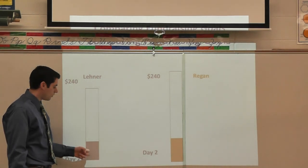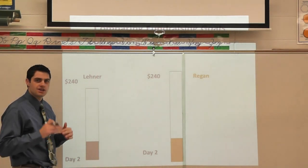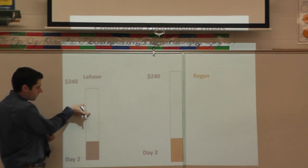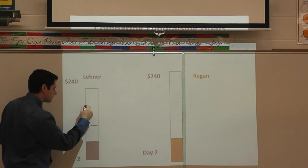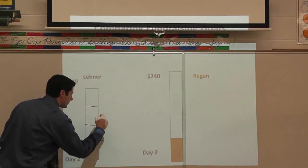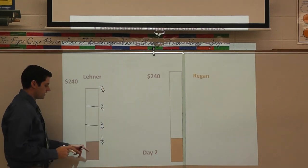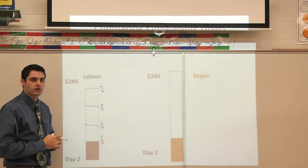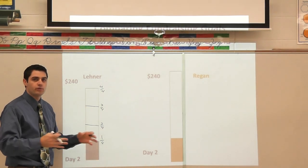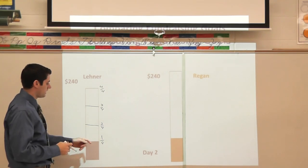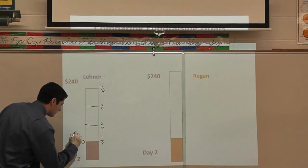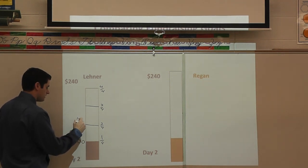Looking at this thermometer on the side, I have to figure out what fraction of our goal have we completed. Using a fraction strip page might help break this out. This looks almost like a fourth — I can almost fit four of these in here. So if I break this up into four equal parts: one-fourth, two-fourths, three-fourths, and four-fourths. A fourth of 240 is the same as taking 240 and dividing it evenly four ways. 240 divided by four is sixty dollars.